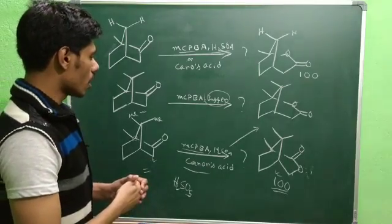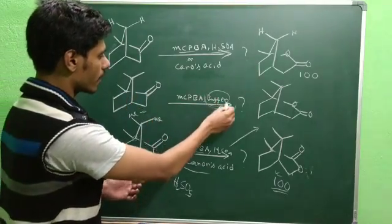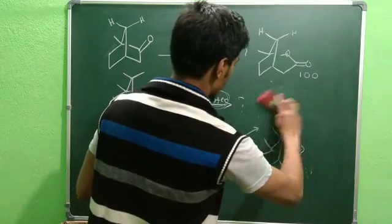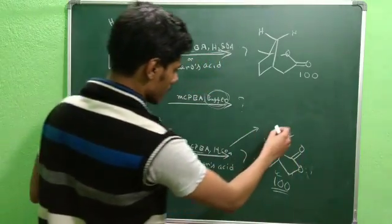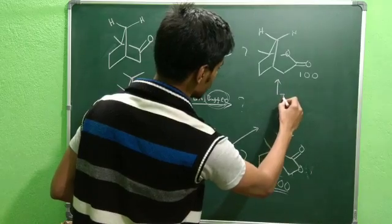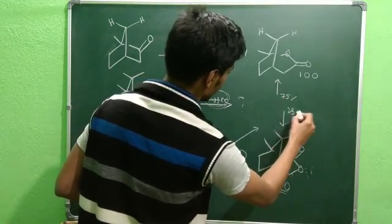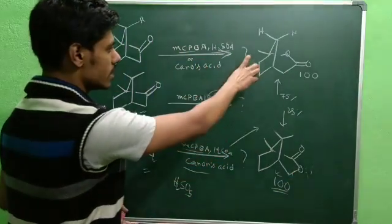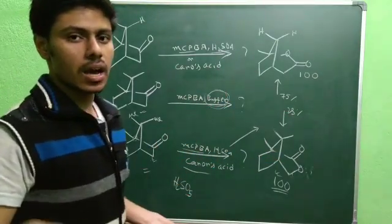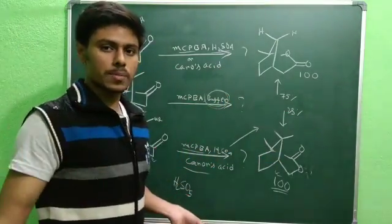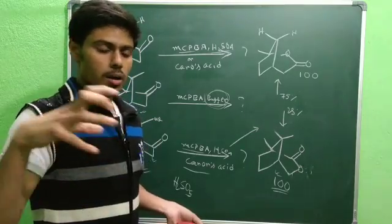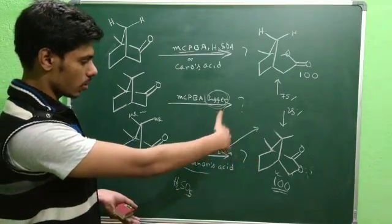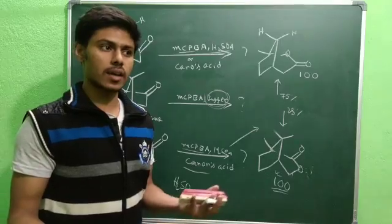In the second case where you use buffer conditions with mCPBA, you will get a mixture of the two products: 75% of the tert-butyl migration product and about 25% of the methylene migration product. This is quite logical - you are getting the major product where the more substituted, electronically more electron-donating group is migrating. But for the third example the result is very confusing, and that's why this question is important.